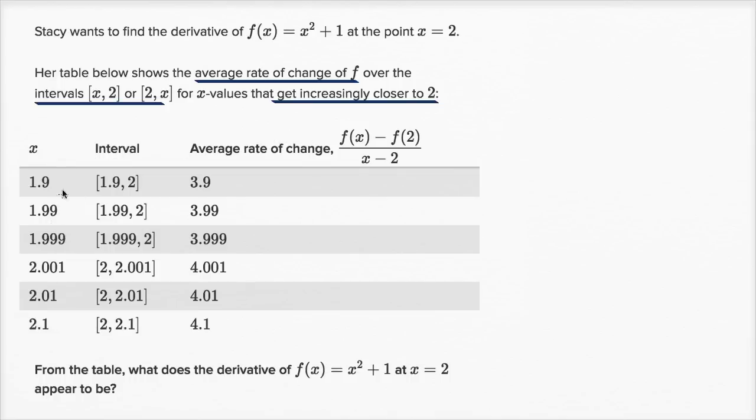Let's read this data here. These are the x values, and she's trying to find the average rate of change between each of these x values and 2 - the average rate of change of the function between when x is one of these values and 2. She has the average rate of change pre-calculated, so we don't have to get a calculator out.